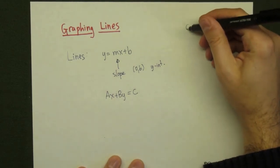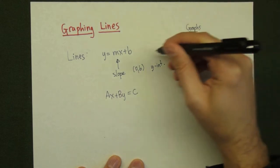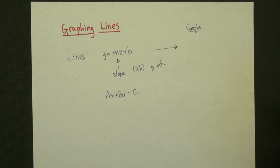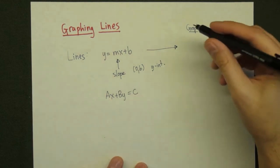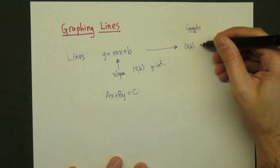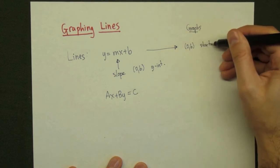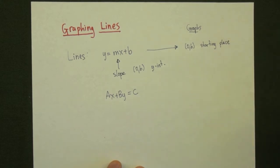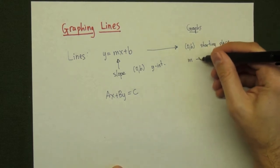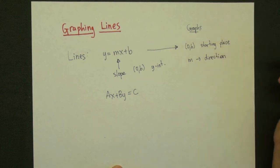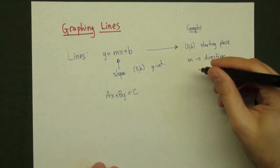If the line starts off in slope-intercept form, then we are going to graph the line using a starting place and a direction. The starting place is going to be the y-intercept, the point 0,b. The direction is going to be given by the slope. Whatever the number in front of the x, the slope, we're going to write down the direction based on how the slope looks.